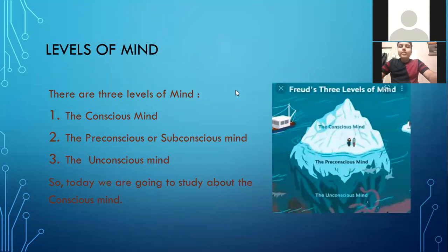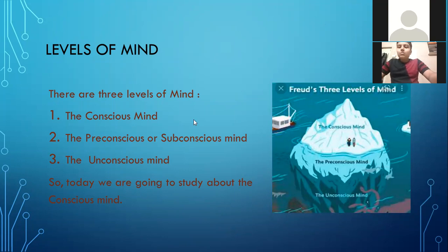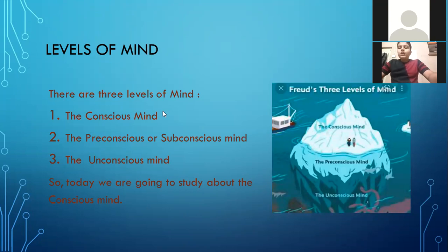We will start with the levels of mind. There are three levels of mind: the conscious mind, the pre-conscious or subconscious mind, and the unconscious mind. Here in the picture, we can see an iceberg which represents our mind — a famous example by Sigmund Freud. The part above the surface is the conscious mind. The parts below are the pre-conscious mind and the unconscious mind. The conscious mind is very small, while the pre-conscious and unconscious minds are very large.